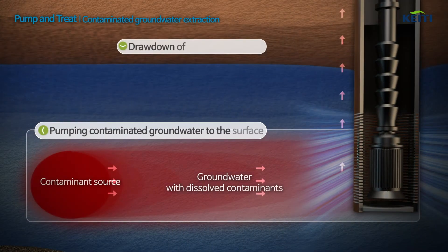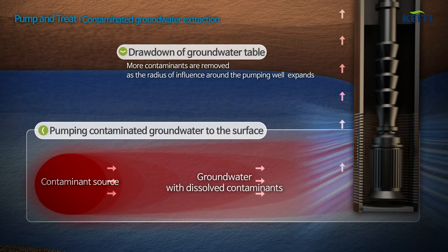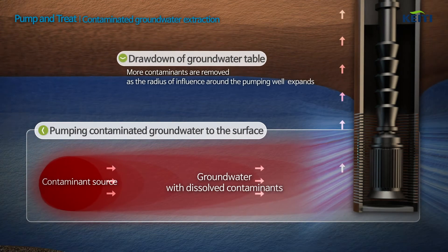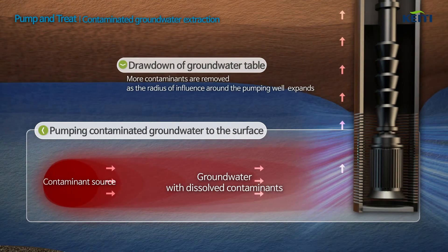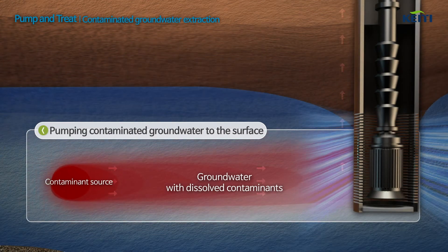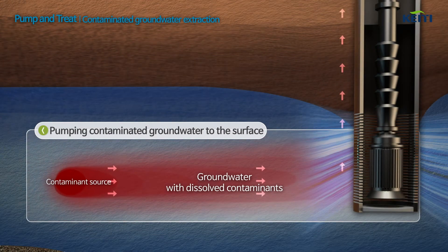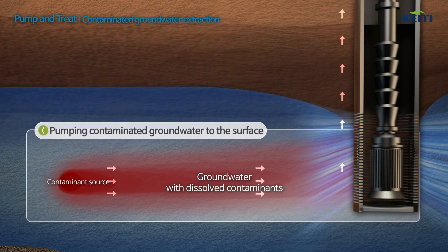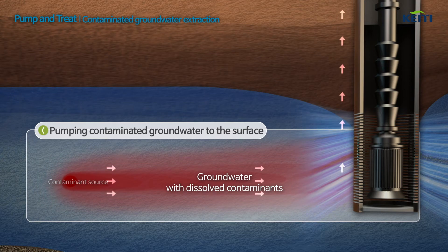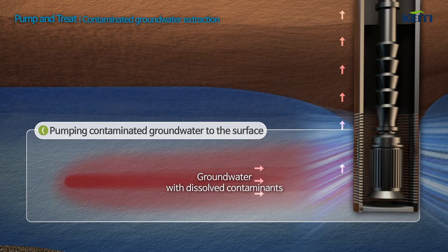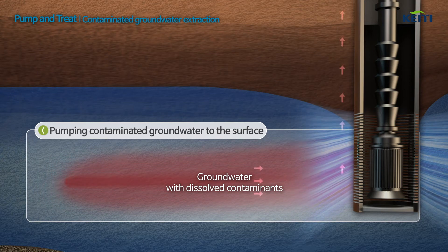Contaminants dissolve from the contaminant source and continue to pollute the groundwater. The contaminated groundwater is extracted and delivered to the above-ground treatment system.